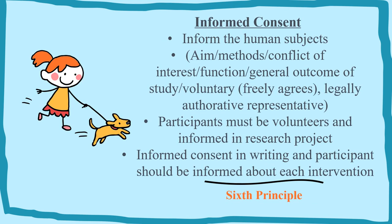The sixth principle is Informed Consent. Human subjects must be informed about the aim of the study, what will be done, any conflicts of interest, the functions involved, and the expected outcomes. Participation must be voluntary. Consent must be given by a legally authorized representative. Participants must be volunteers who are fully informed about the research project and every intervention planned. Informed consent must be documented in writing.